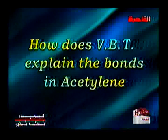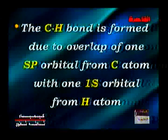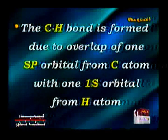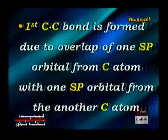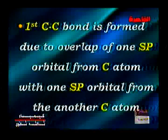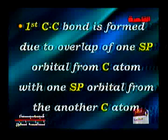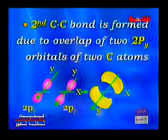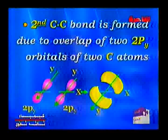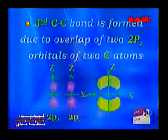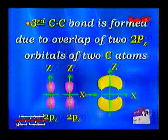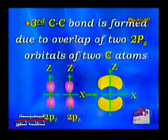How does the valence bond theory explain the bonds in acetylene? The C-H bond is formed due to overlap of one sp atomic orbital from a carbon atom with the 1s orbital from a hydrogen atom. The first carbon-carbon bond is formed by sp-sp overlap. The second carbon-carbon bond is formed due to overlap of the 2pz orbital of the two carbon atoms. The third carbon-carbon bond is formed due to overlap of the 2py orbital of the two carbon atoms.